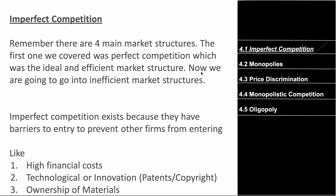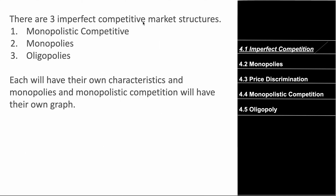Welcome to Unit 4. In the previous unit we talked about perfect competition, which is an efficient and ideal type of market structure. There are three types of imperfect competition that are inefficient, create deadweight loss, and are simply bad. We have imperfect competition because of barriers to entry, such as high financial cost, technological or innovation preventions like patents and copyright, and ownership of materials.